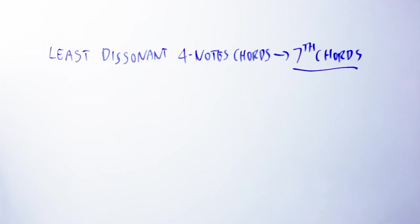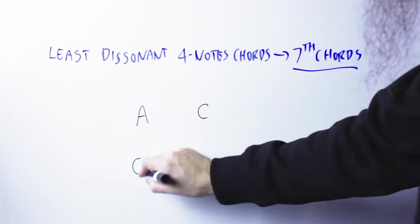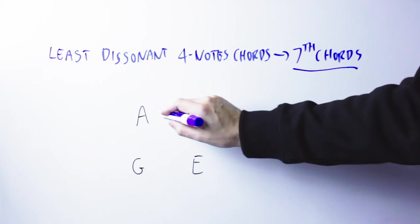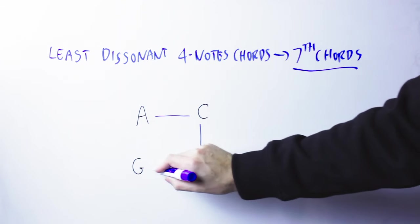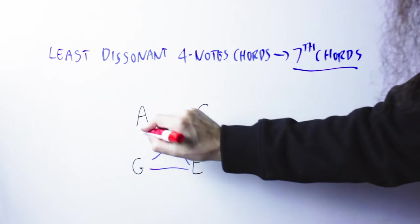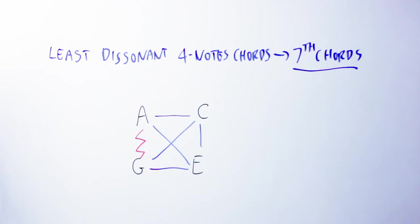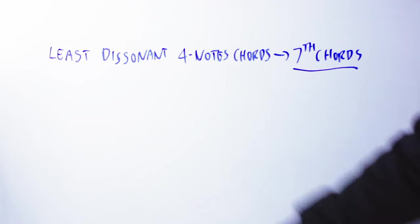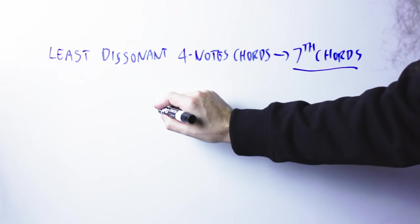And there, we have some seventh chords that have only one dissonant relationship, like, I don't know, Am7, so a minor seventh chord. The Am7 will have an A, a C, an E, and a G. And on the guitar, I have to play them in a different order. And as you can see, the A and the G are dissonant because there is an interval of a seventh, but all the other pairs are consonant.